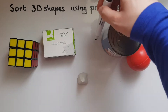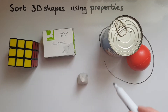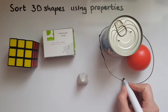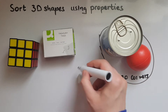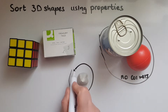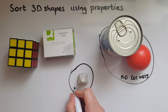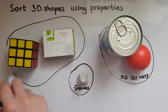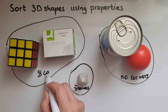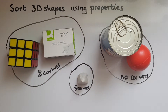So we could say this group has no corners or zero corners, this group has 5 corners, and this group has 8 corners. So we've just sorted these 3D shapes based on the number of corners, but we could sort them in other ways as well, and that's what we're going to try and do.